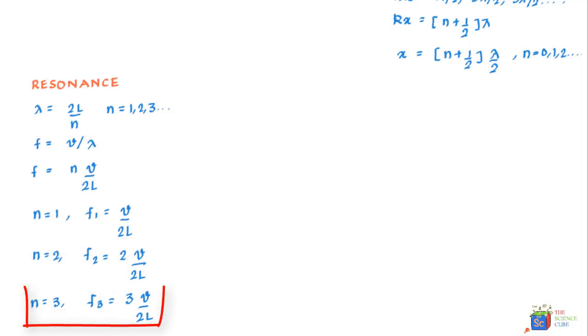Also the associated frequencies are called F1, F2, F3 and so on and a collection of all possible oscillation modes is labeled the harmonic series. And N is called the harmonic number of the Nth harmonic.